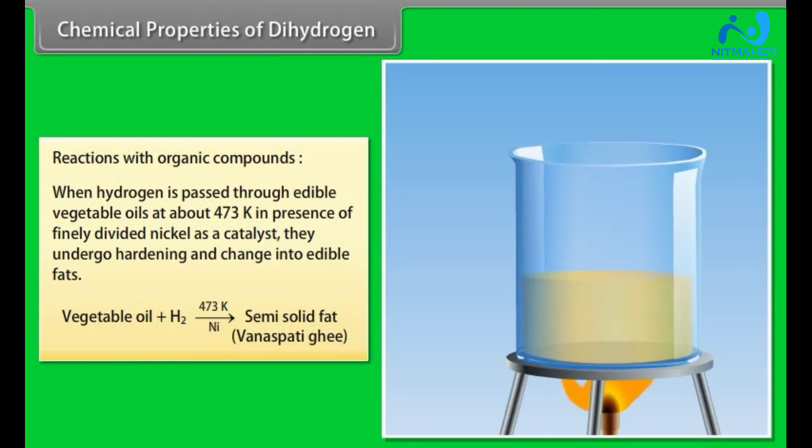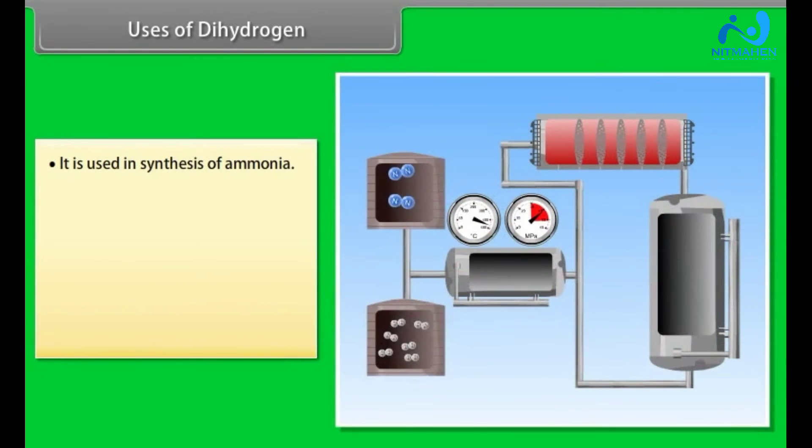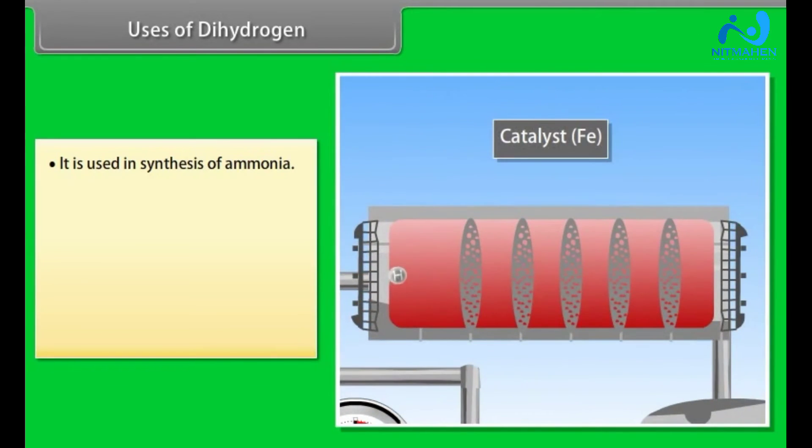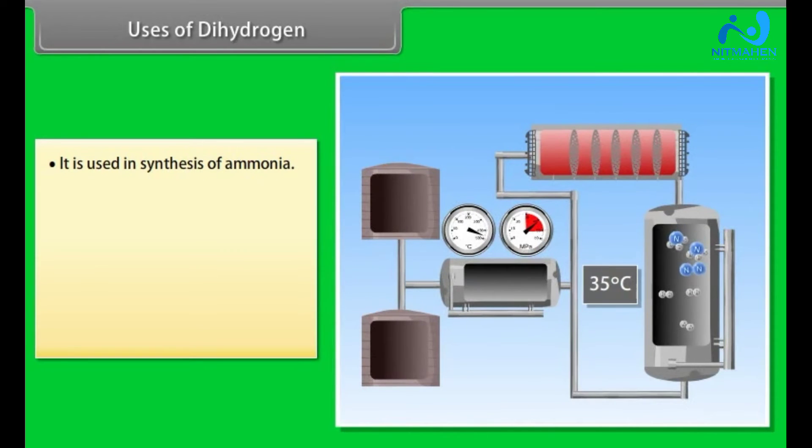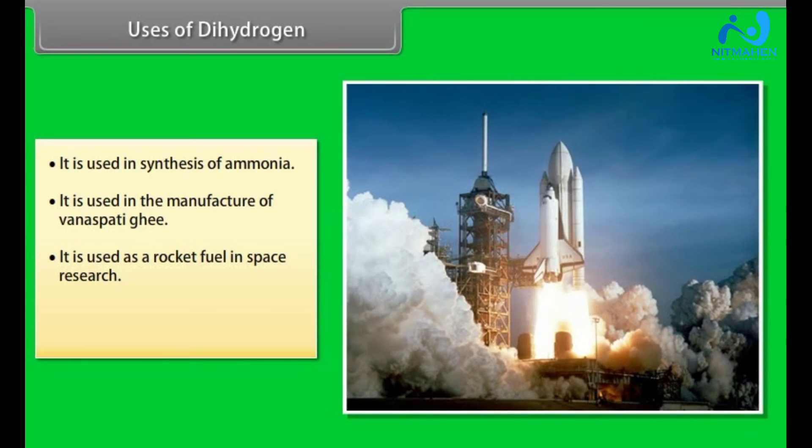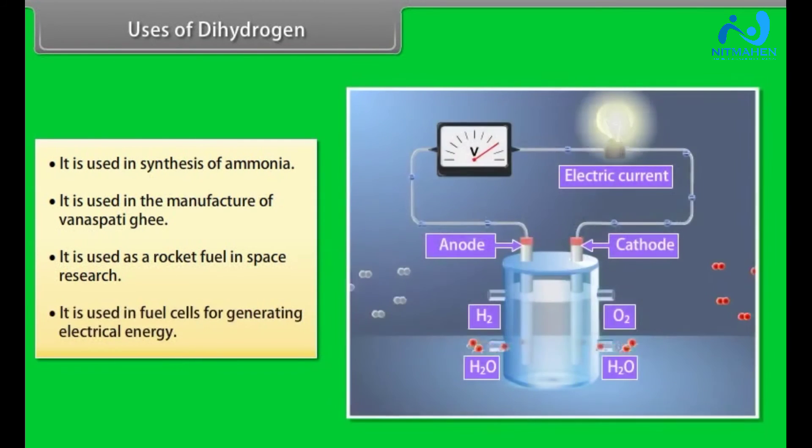Uses of dihydrogen. It is used in synthesis of ammonia. Nitrogen and hydrogen are passed to heater, where these are heated up to a certain temperature. After that, they are compressed and then passed to heater, where the reaction takes place. After that, the mixture is passed to waste heat boiler, from which ammonia is cooled and then stored, and nitrogen and hydrogen are recycled. It is used in the manufacture of vanaspati ghee. It is used as a rocket fuel in space research. It is used in fuel cells for generating electrical energy.